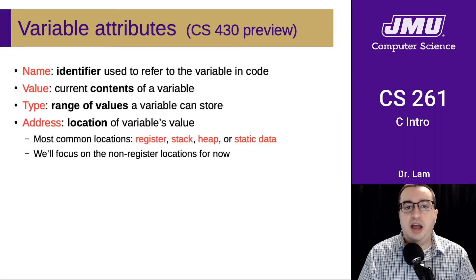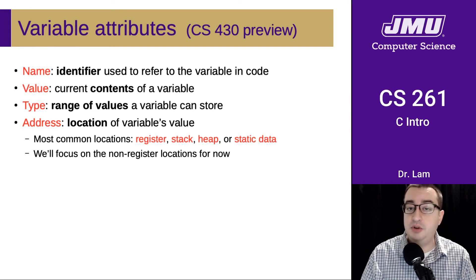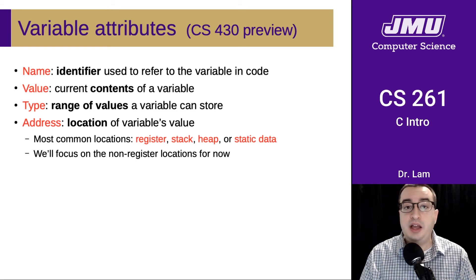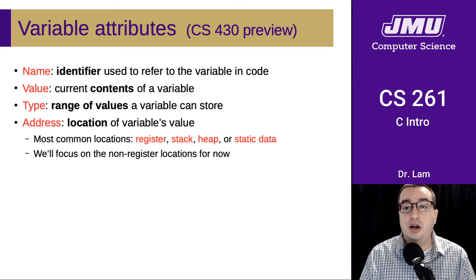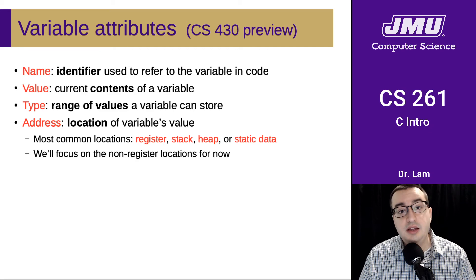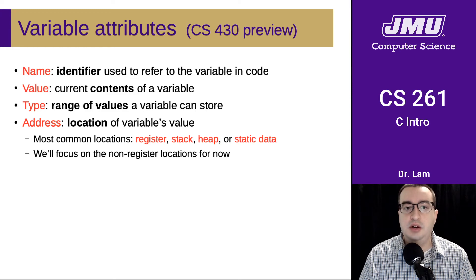The address of a variable is the location where that variable's value is actually stored in memory. This is where we start looking at variables at a slightly lower level than in a language like Java. A variable could be stored in a register, on the stack, on the heap, or in static data. We'll talk more about these memory regions shortly, and focus on the non-register locations for now — we'll come back to registers later in the course.